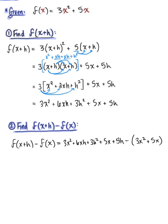Now to simplify this, we're going to take this negative and distribute it through to both terms in f of x. So this will leave us with 3x squared plus 6xh plus 3h squared plus 5x plus 5h. And now this will be minus 3x squared minus 5x.